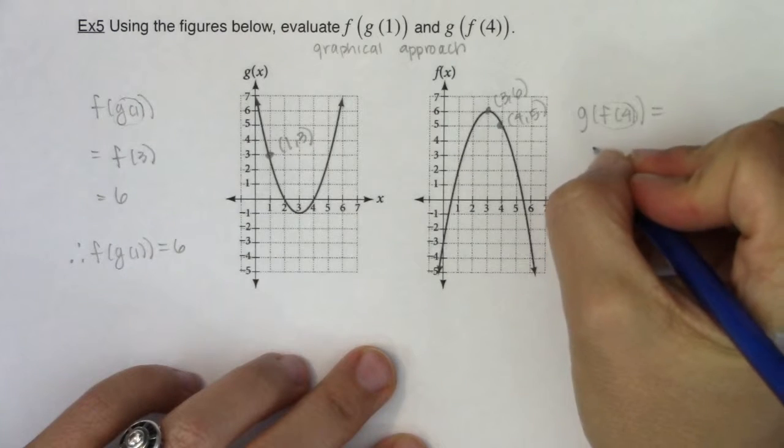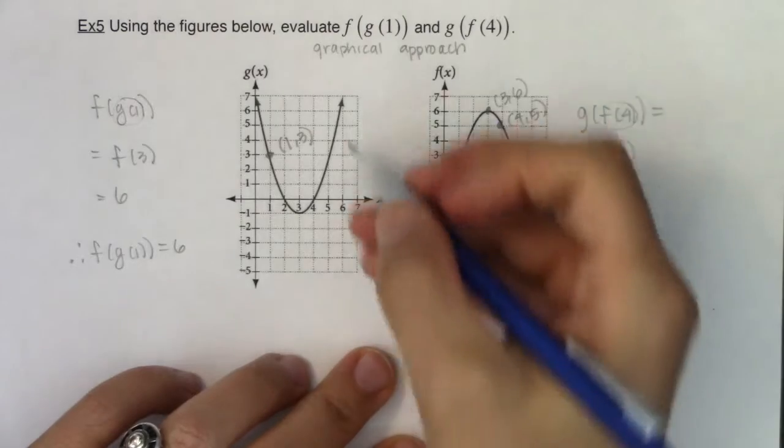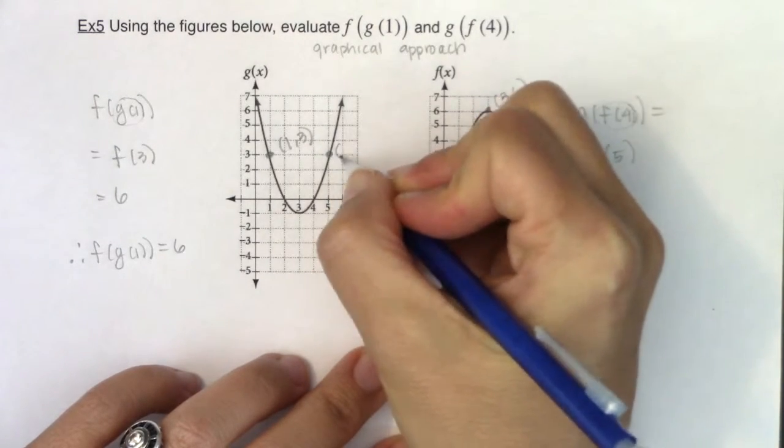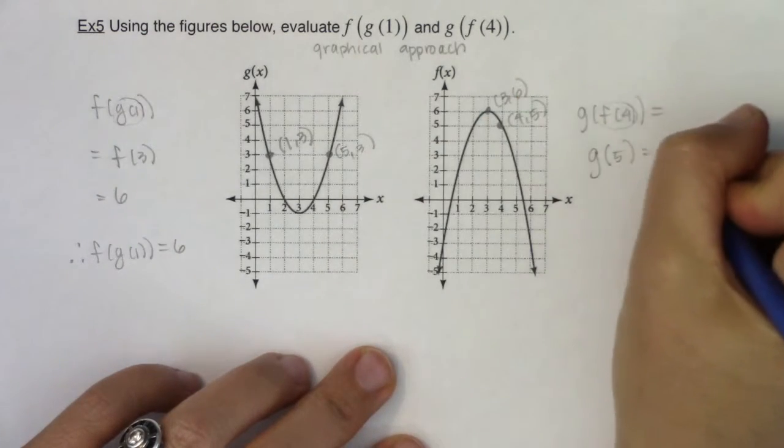So this will ultimately be g of 5. My new input is 5. So let's go over to the g graph. There's 5, 1, 2, again it looks like it's about 5, 3. So g of 5 would be 3.